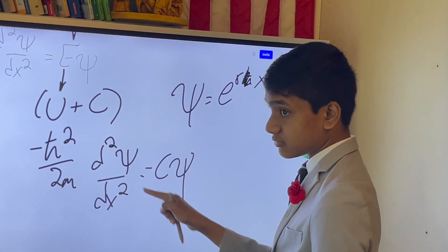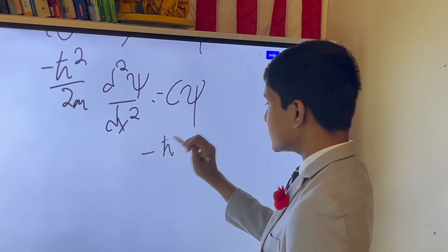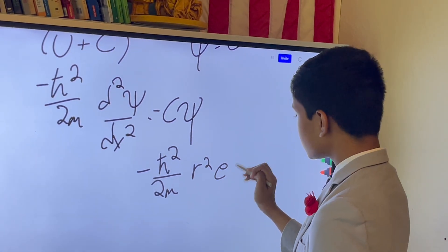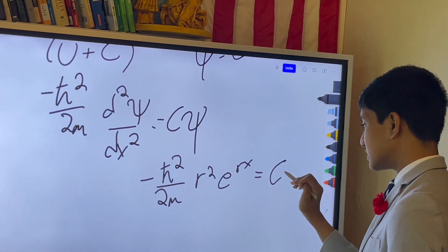So, what happens when we plug that in? You get minus h bar squared over 2m r squared, since you're taking the derivative twice. e to the rx is equal to c e to the rx.